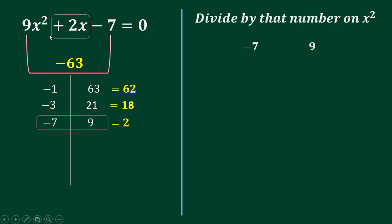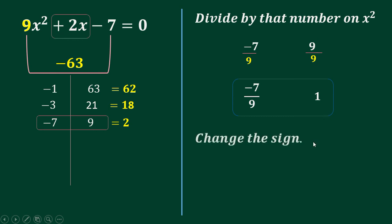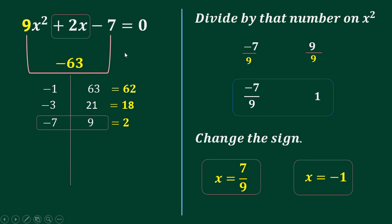Divide by 9: negative 7 over 9, and 9 divided by 9 is 1. Then change the sign: negative becomes positive, and positive becomes negative. So x equals 7 over 9 and x equals negative 1. These are the roots of this quadratic equation.